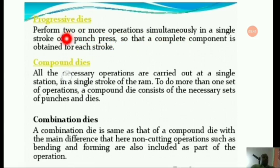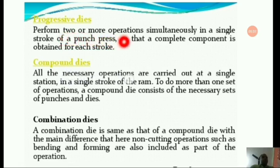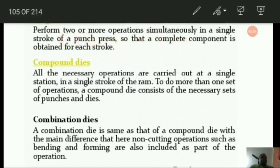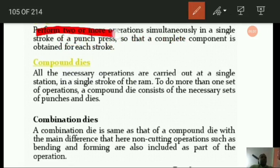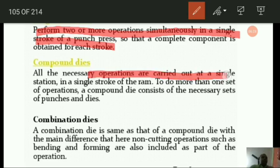The commonly used dies in sheet metal operations include progressive dies, compound dies, and combination dies. Progressive dies perform two or more operations simultaneously in a single stroke of the punch press. Compound dies: all necessary operations are carried out at a single station in a single stroke of the ram, with the necessary sets of punch and dies.